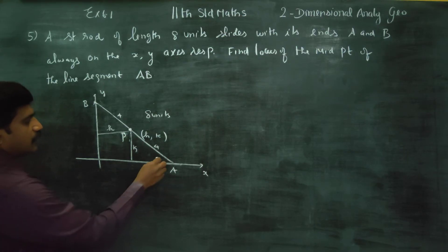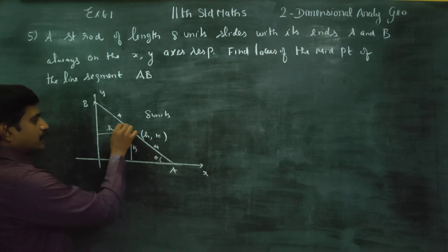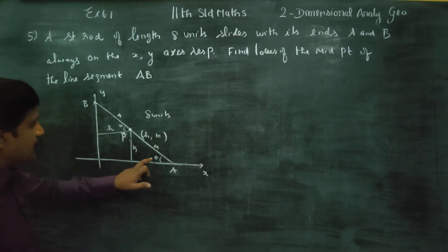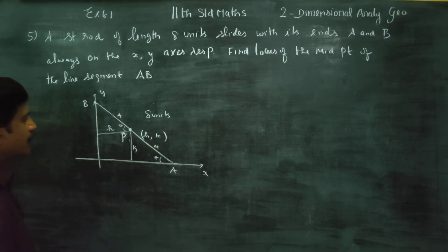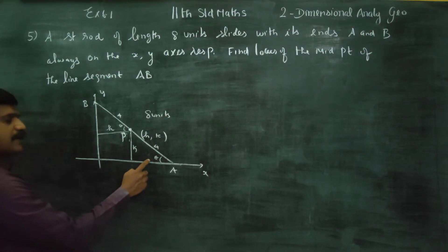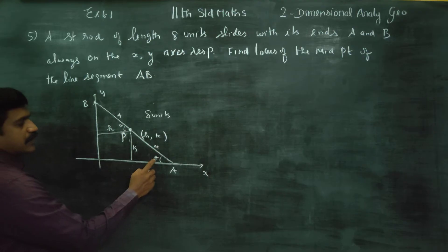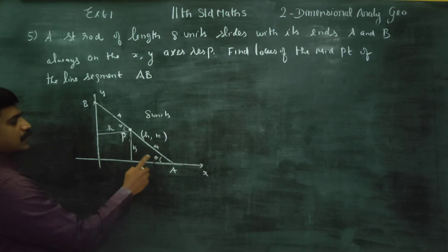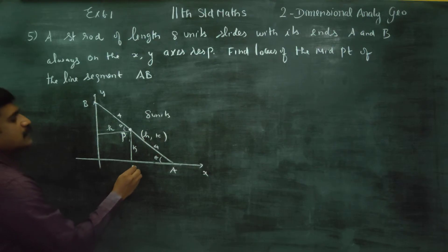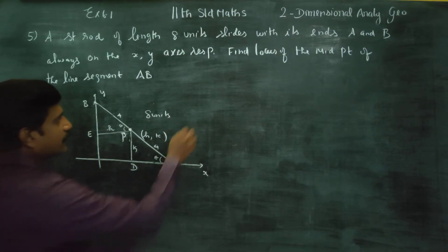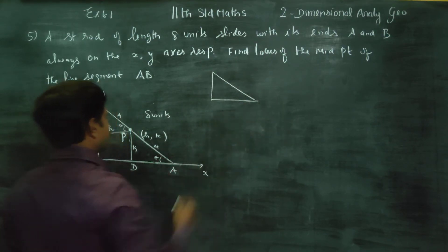This angle is theta. Using a transversal, these two lines are parallel — corresponding angles are equal. Taking the first triangle, we can apply sine theta. From the triangle, if we choose any of these triangles — whether this triangle or the next triangle — we can derive the relationship.